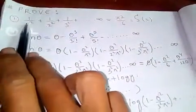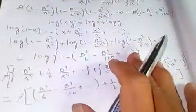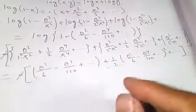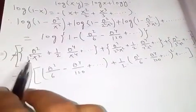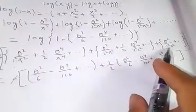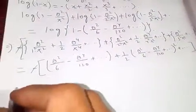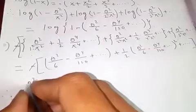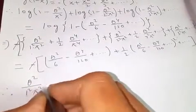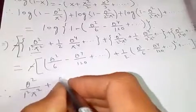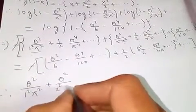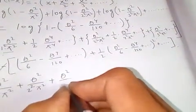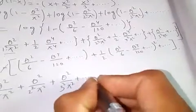We want to find 1/1² + 1/2² + 1/3² + and so on. So we collect all the θ² terms from the left-hand side: -(θ²/1²π²) - (θ²/2²π²) - (θ²/3²π²) - and so on.